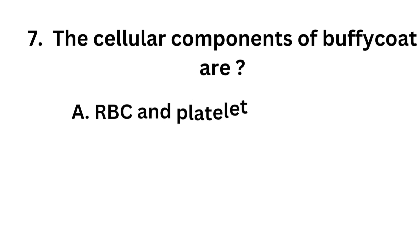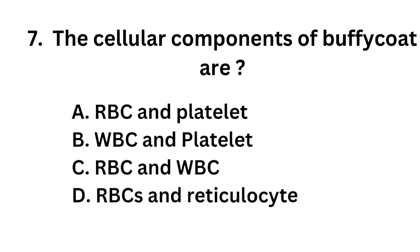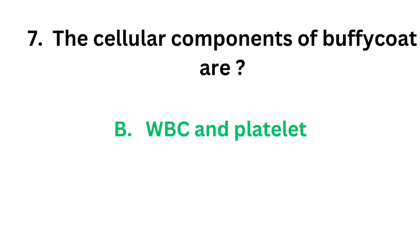Question number 7. The cellular components of buffy coat are: Option A: RBC and platelet. Option B: WBC and platelet. Option C: RBC and WBC. Option D: RBC and reticulocyte. The correct answer is Option B, WBC and platelet. Cellular components of buffy coat are WBC and platelet.